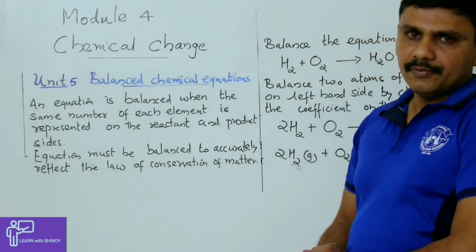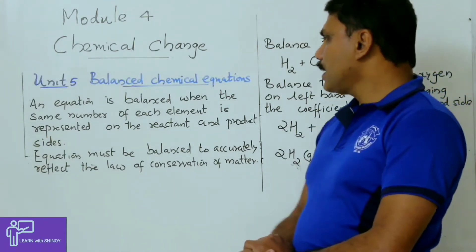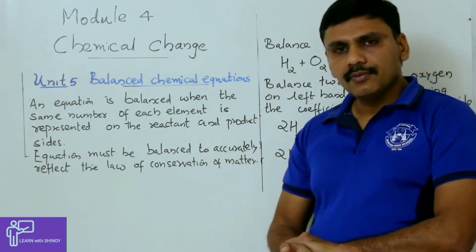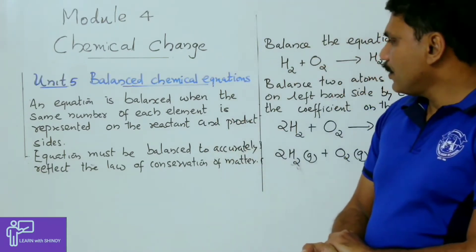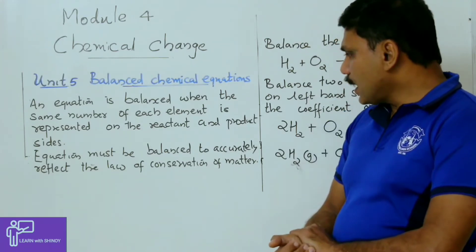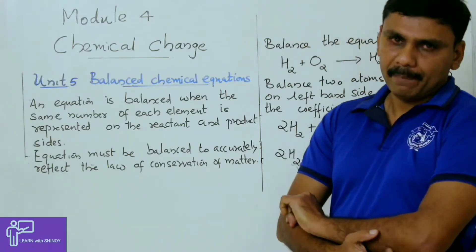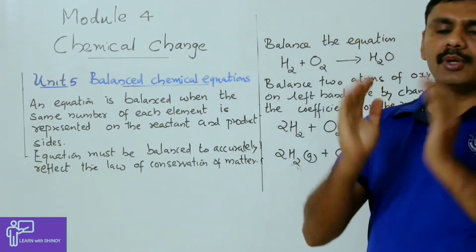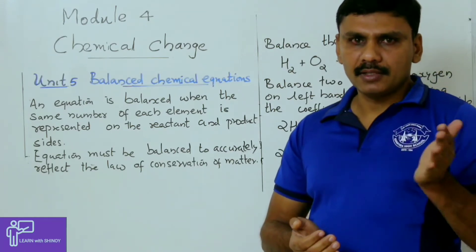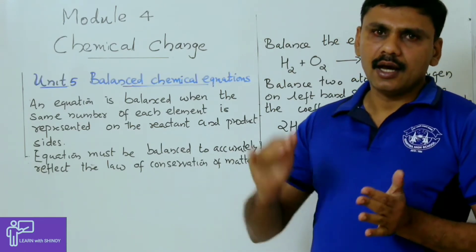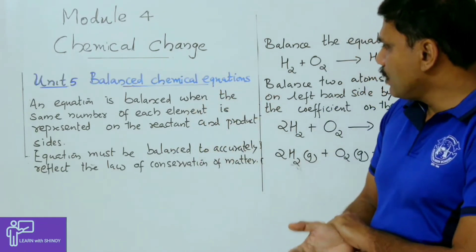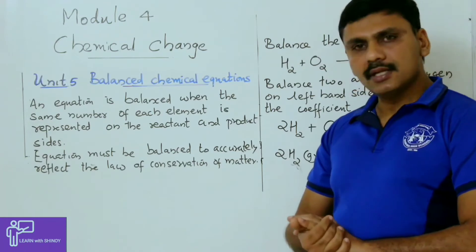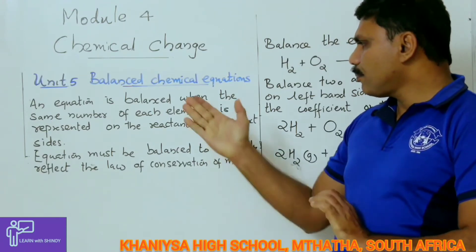In unit number 5 we are discussing balancing chemical equations. An equation is balanced when the same number of each element is represented on the reactant and product side. A chemical equation is balanced when the number of elements on both sides are the same.